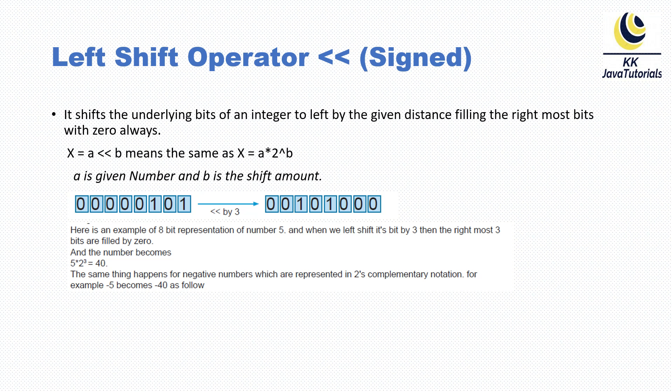The left shift operator works for signed numbers, meaning it works for both positive and negative numbers. The left shift operator shifts the underlying bits of an integer to the left by a given distance, filling the rightmost bits with zero always. So if you have a number 'a' and you want to left shift by 'b' bits, the calculation is: a multiplied by 2 raised to b.